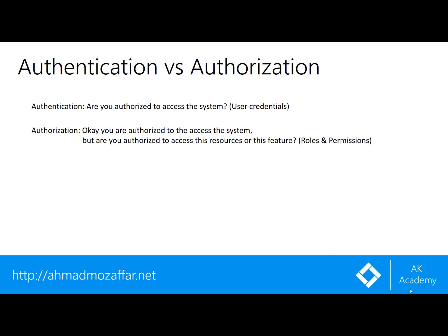Now let's explain the difference between authentication and authorization. Authentication is the process of confirming the user's identity — whether this person can have access into the system or not — and this happens via user credentials such as username and password. Authorization is the process that comes after authentication; it determines whether the authenticated user can access specific resources and features within the system, which happens via roles and permissions.